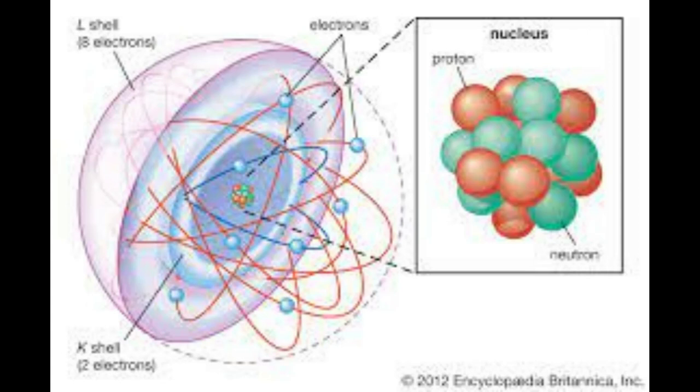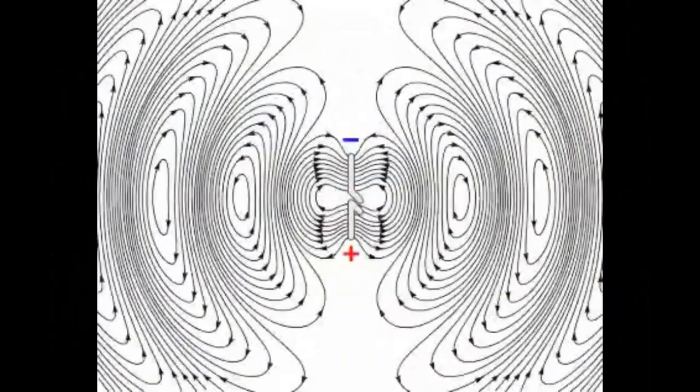When light hits this dense structure, it is absorbed or scattered in different directions, making it impossible for the light to pass through the wall.